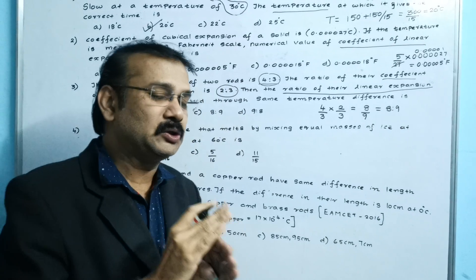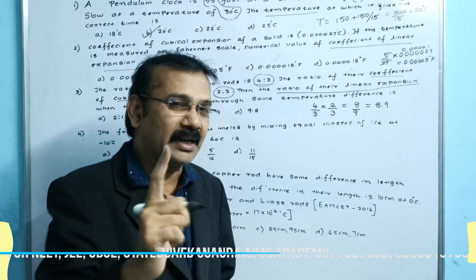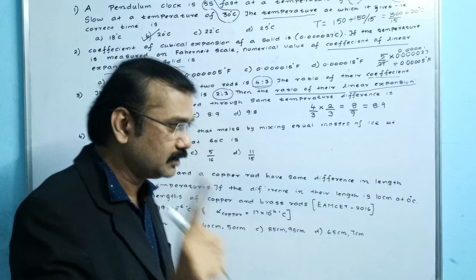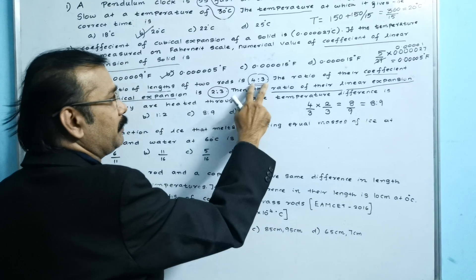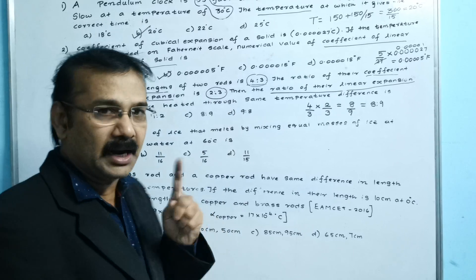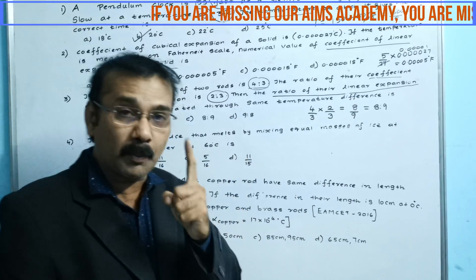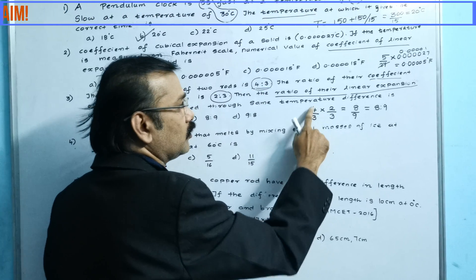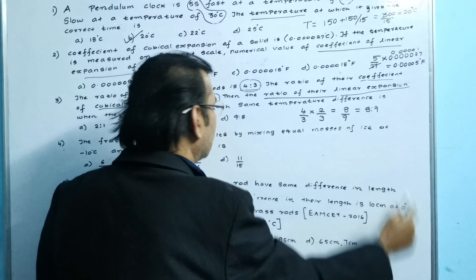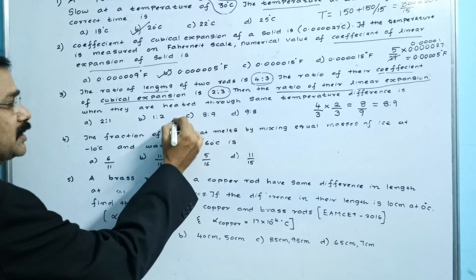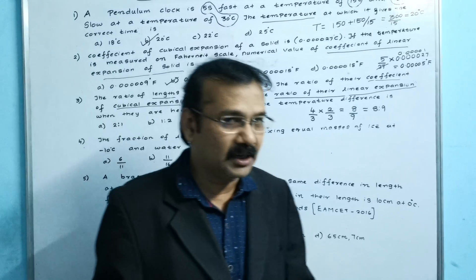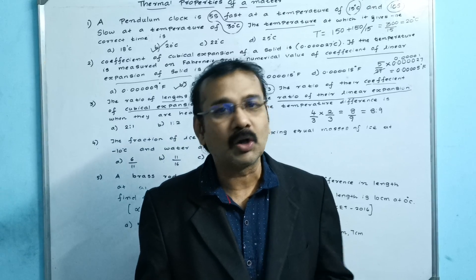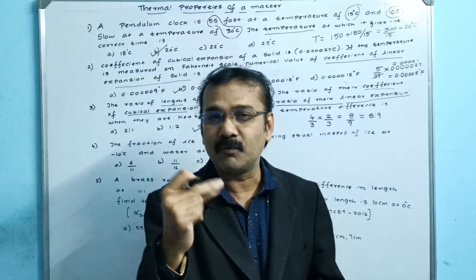There is no need for any formula. The model is: the ratio of coefficient of linear expansion is given, and the length is given — multiply these together. The coefficient of cubical expansion is found by writing the ratio numbers: 4 by 3 into 2 by 3 equals 8 by 9. The option lies in 8 is to 9. Again, the third sum solved in a single step in a few seconds. The answer is 8 is to 9.